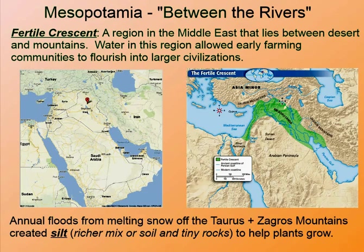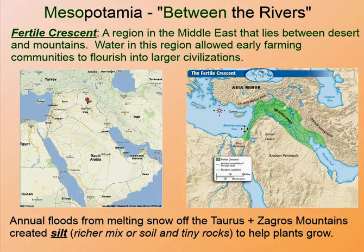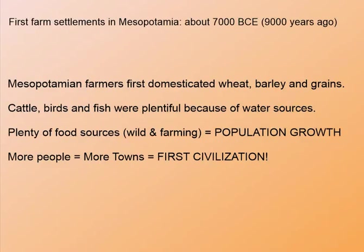Water would flow off the mountains after snow and ice would melt during the seasons and run downhill towards the desert, collecting in these rivers. Annual flooding from melting snow off the mountains would create silt — that's a richer mix of soil and tiny rocks — which is great to help plants grow. The first farm settlements appeared in Mesopotamia around 9,000 years ago, about 7,000 B.C.